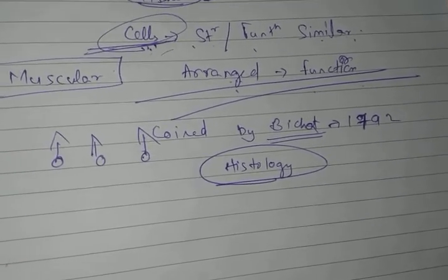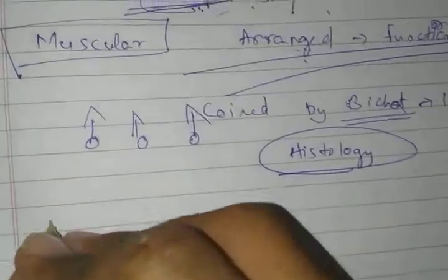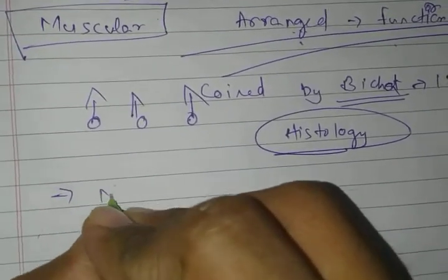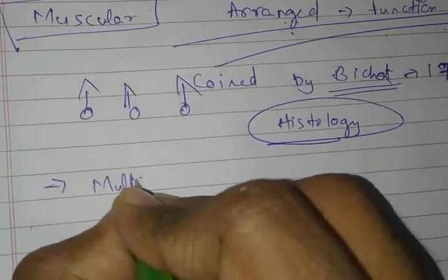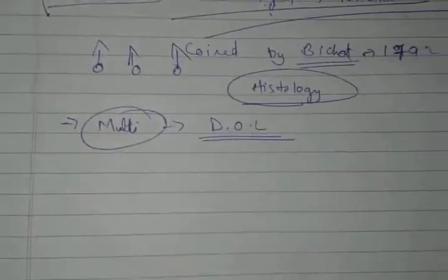What is the importance of tissue? Tissue provides division of labor. We know that. What is the importance of multicellular organism? It shows division of labor.